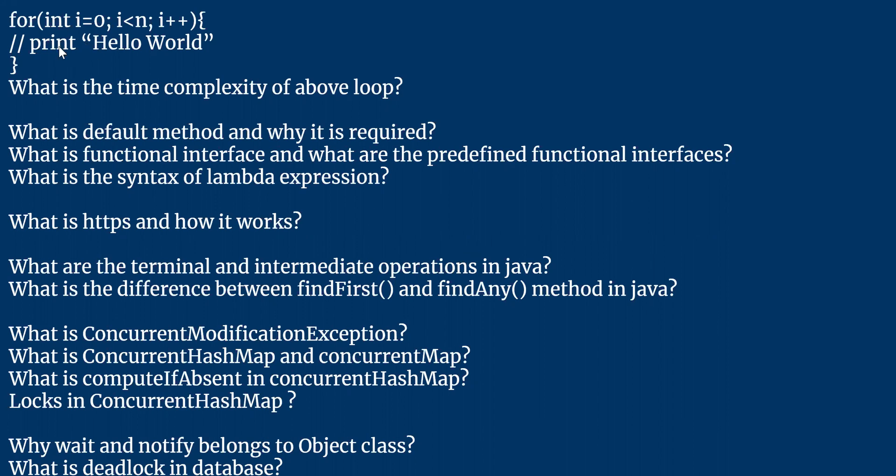The first question is: we have a for loop and in that for loop we are printing 'Hello World'. Can you tell me what is the time complexity of the above loop? The for loop starts from zero and executes until i is less than n, so it will execute n times. The time complexity should be Big O of n.